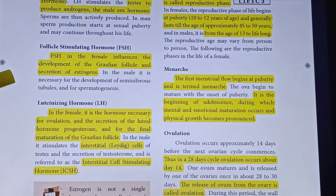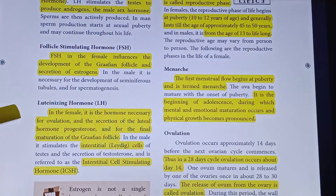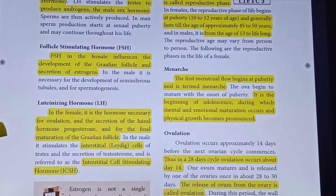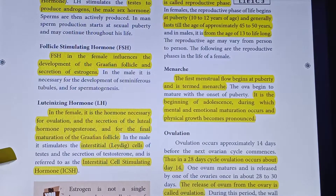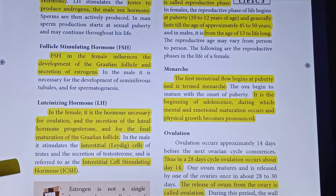FSH is necessary for spermatogenesis — the formation of sperms. The luteinizing hormone (LH) in females is necessary for ovulation, which is the release and maturation of one egg every month, and for the secretion of the luteal hormone progesterone and the final maturation of the Graafian follicle. In males, LH stimulates the interstitial cells (Leydig cells), and is called interstitial cell stimulating hormone (ICSH).